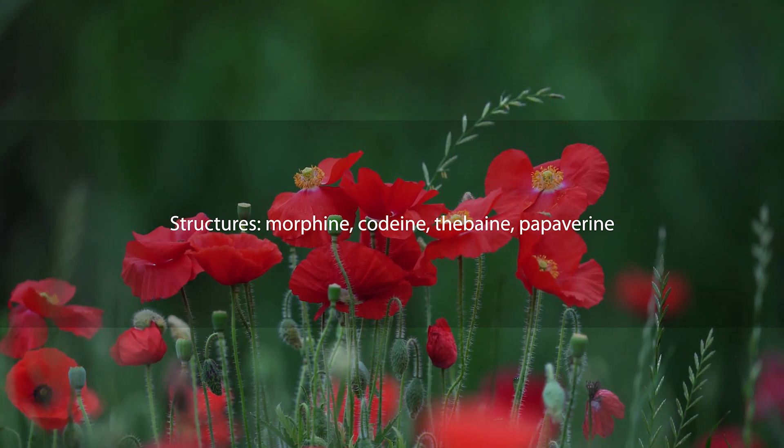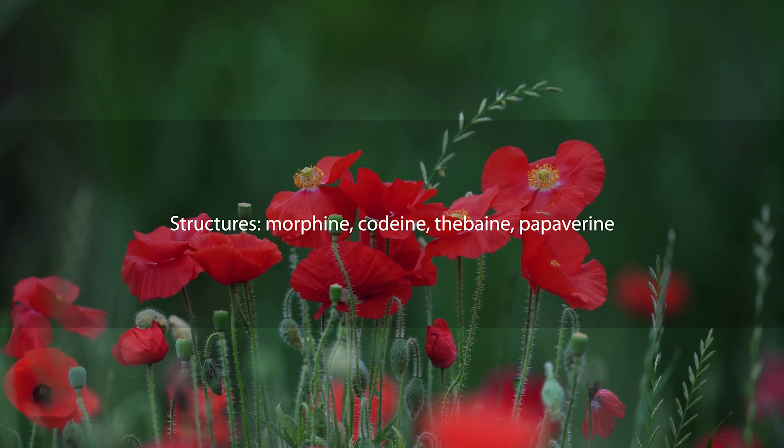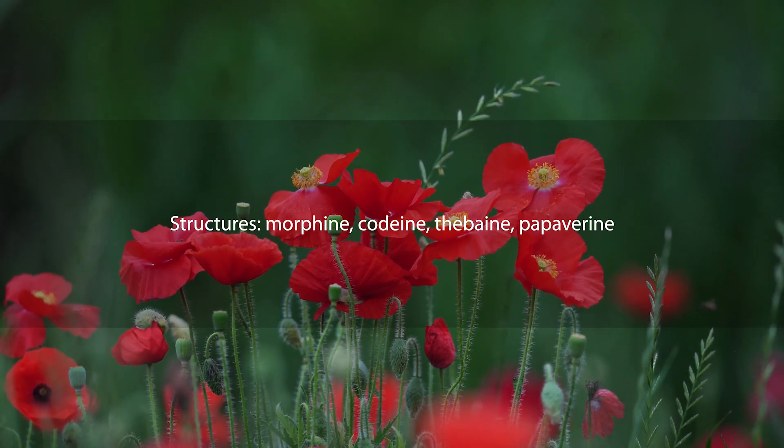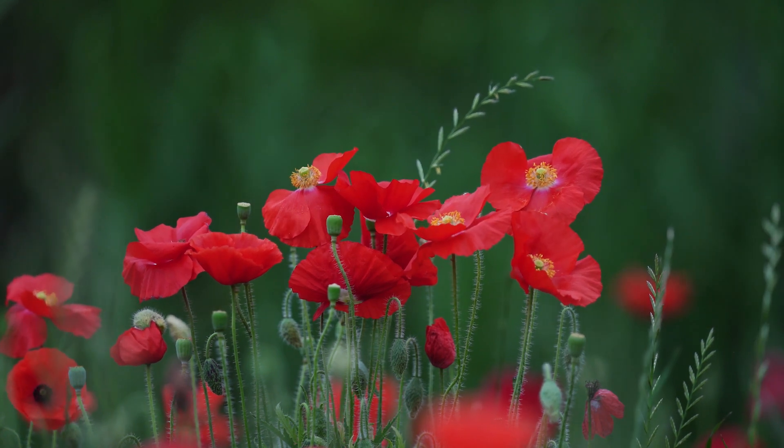Garden poppy contains more than 40 different alkaloids. These include, for example, morphine, which is a powerful analgesic agent, cough-suppressing codeine, and papaverine, which acts against smooth muscle spasms.